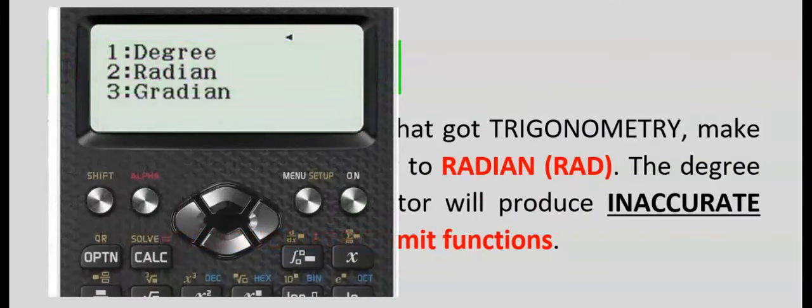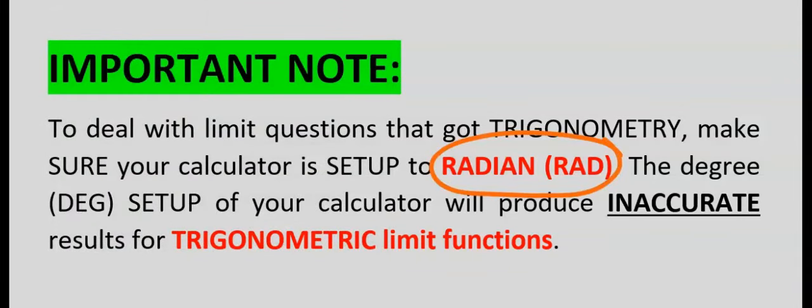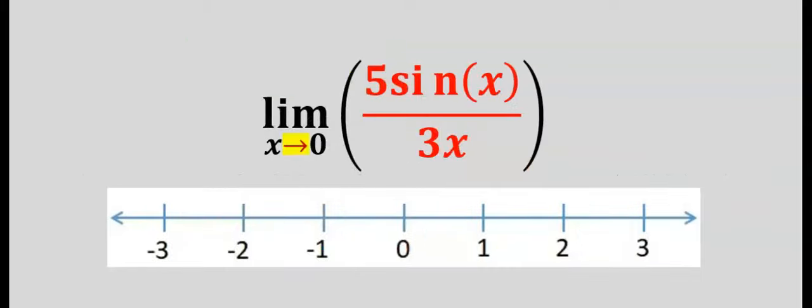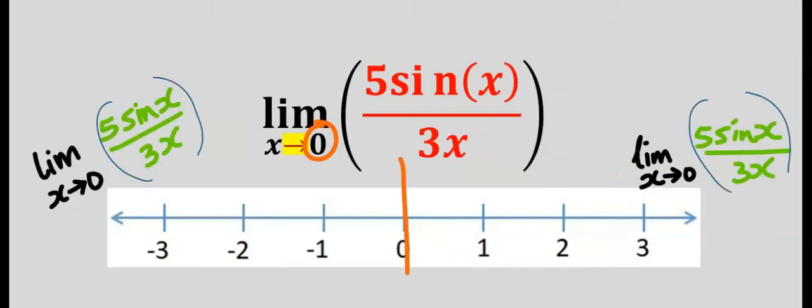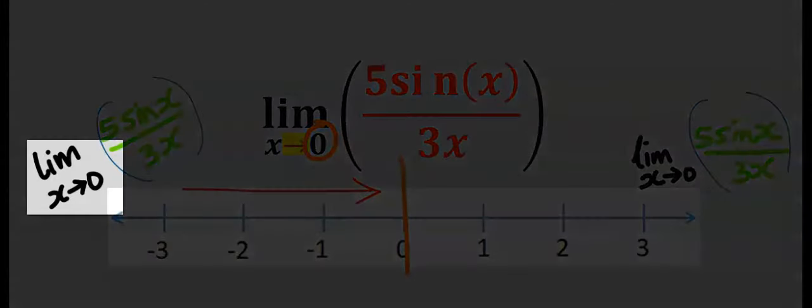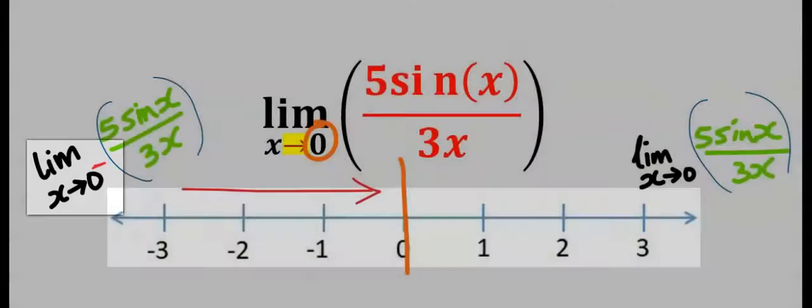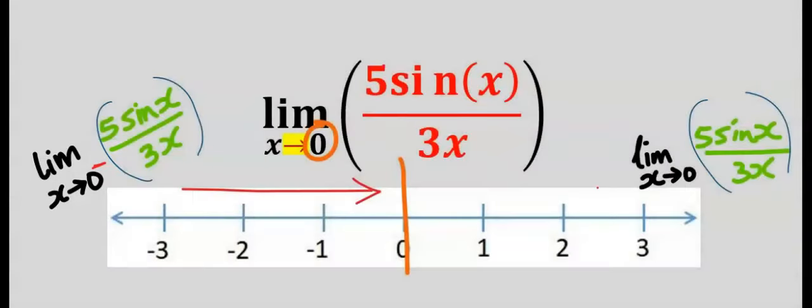Next, on the number line, consider zero which is here. We are going to approach this limit from the left-hand side, and to indicate this approach we are going to put a minus on top of the zero.